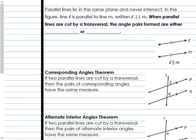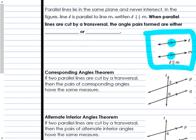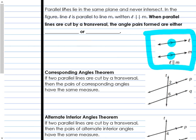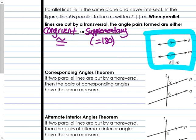That's a transversal intersecting two lines, but when those two lines are parallel, things change. Parallel lines are lines that lie in the same plane and they never intersect. In this figure, L is parallel to M. Notice the single arrow — that's how they're notated as parallel. When parallel lines are cut by a transversal, the angle pairs formed are either congruent — equal to each other — or supplementary. We'll be setting up equations that either equal each other or add up to 180. This is only if the two lines are parallel.